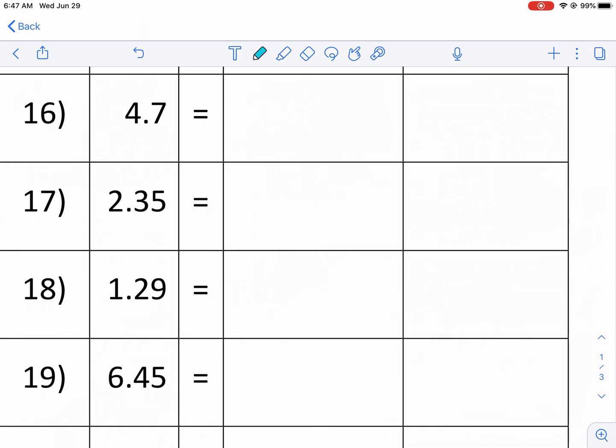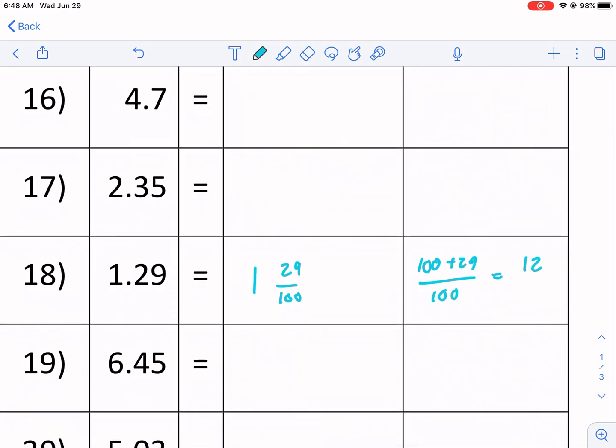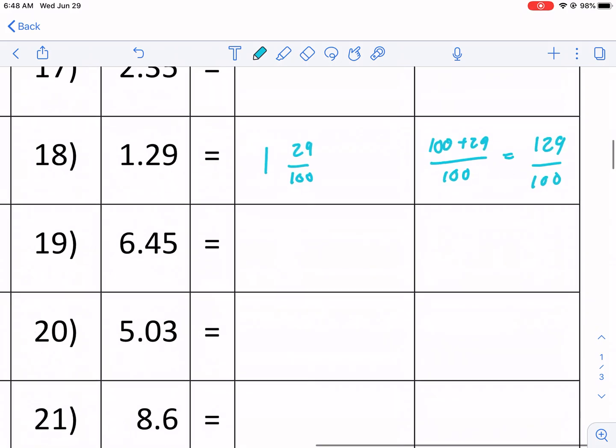Let's go ahead and go to this one. Let's just do a couple more. We have one in 29 over 100. We get 100 plus 29 in the top over 100. That's our fraction denominator. 129 out of 100 is our answer there.